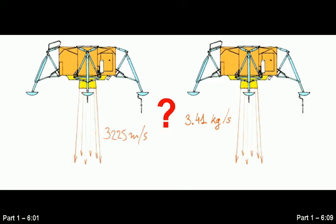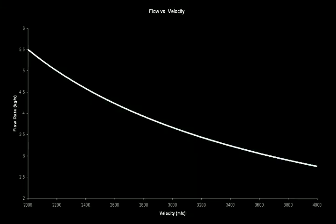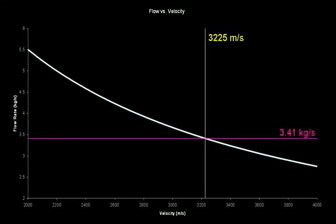What's weird is that Gilliam's numbers actually seem to work. Newton's second law of motion tells us that if the moon is pulling on the LM with a force of 11 kilonewtons, then by applying an 11 kilonewton force in the opposite direction, your net change in velocity should be zero. If you multiply these two numbers together, you get something very close to 11 kilonewtons, but then any pair of numbers on this curve can be multiplied together to get 11 kilonewtons. So how did he come up with this particular combination?